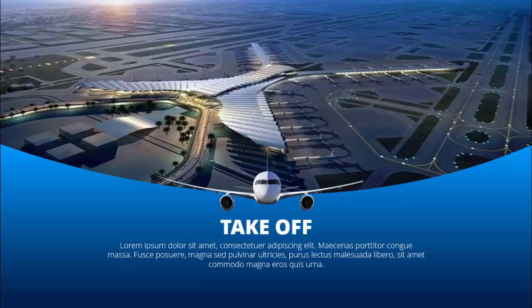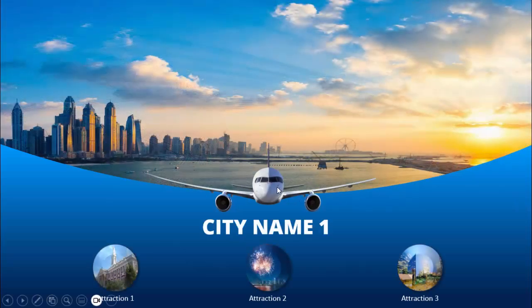In today's tutorial I'm going to show you how to create a morph transition slide in PowerPoint. As you can see, I have added this image with the airplane and in the background I've added the airport aerial view image. You can add a title and detail text — here I'm saying it is going to take off. When I click, you can see the image of the plane got bigger and the background image also changed to this particular city.